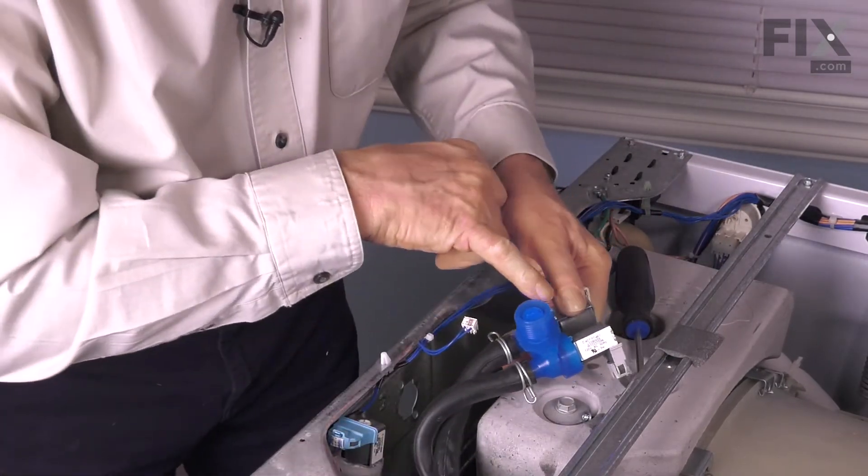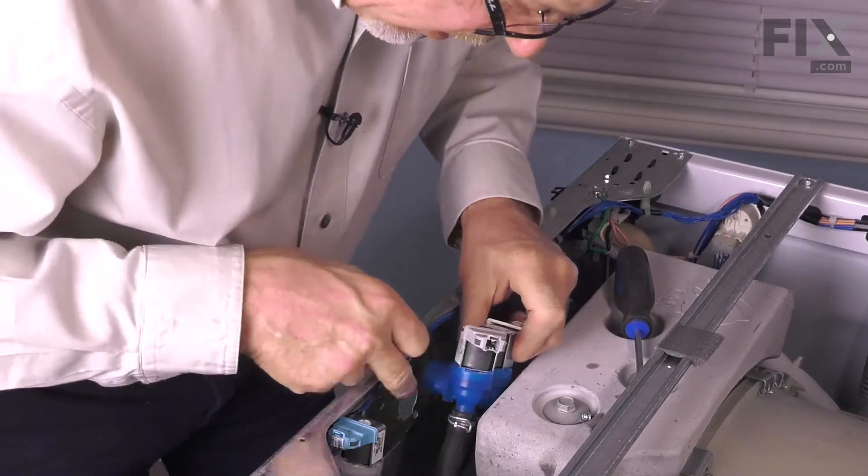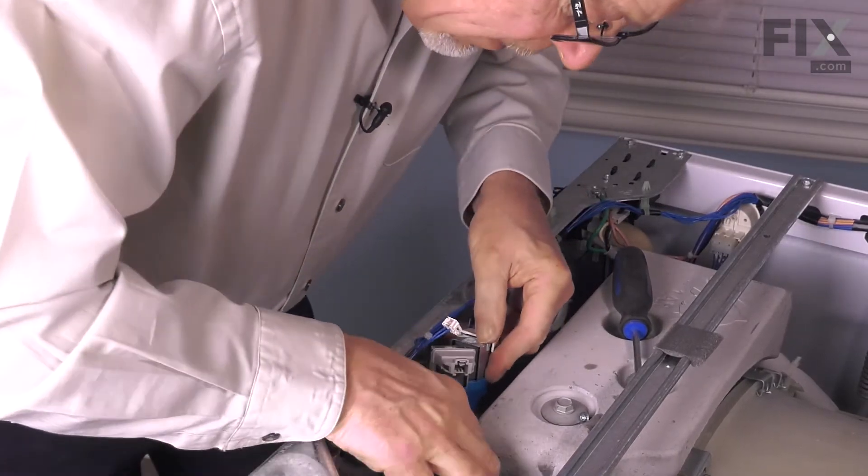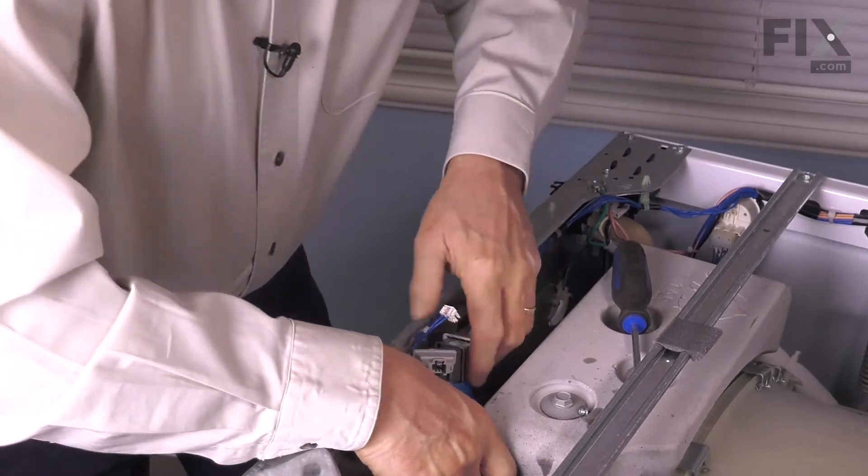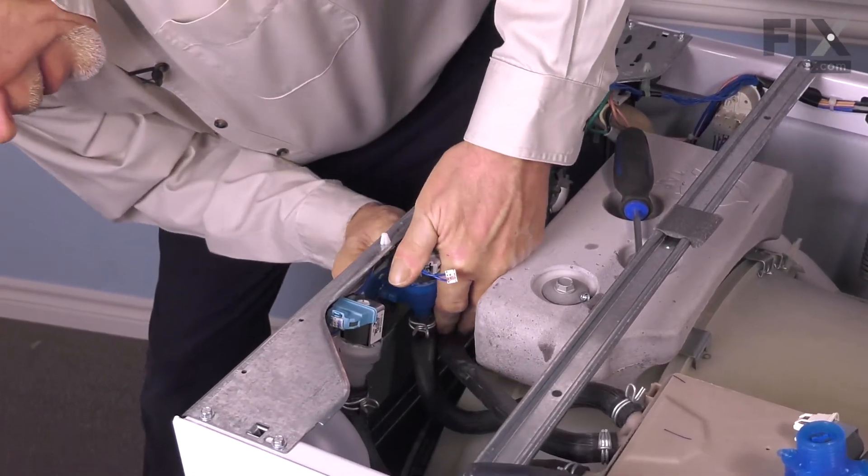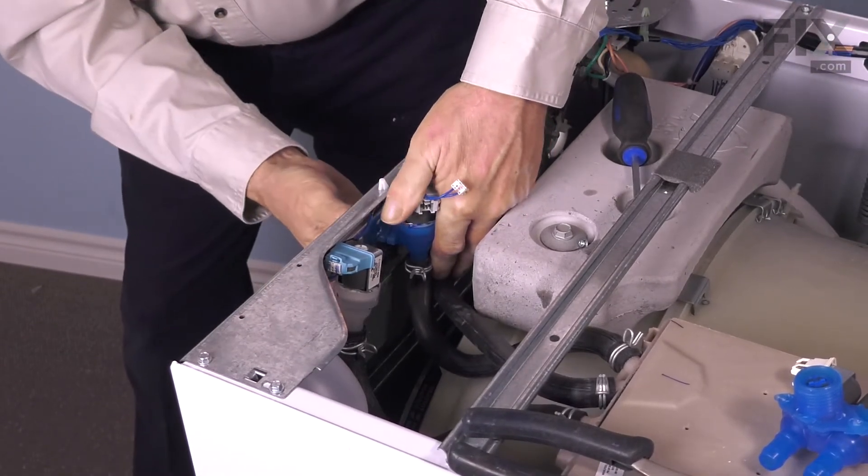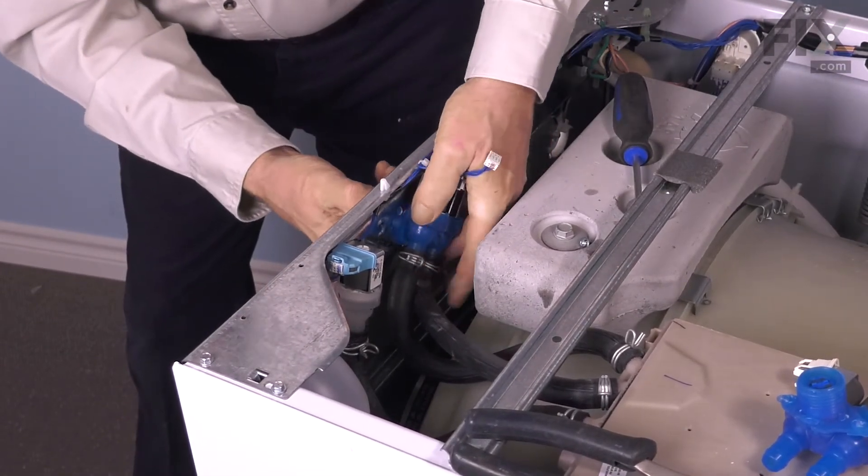You'll note that there are two square tabs on that valve that will line up with the openings in that back panel. If we press the valve through the back, line up those two tabs so it goes all the way through and then rotate the valve counterclockwise.